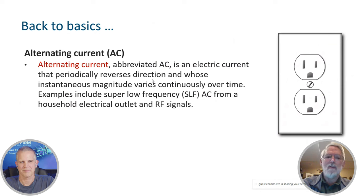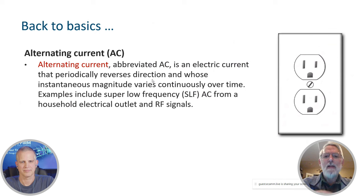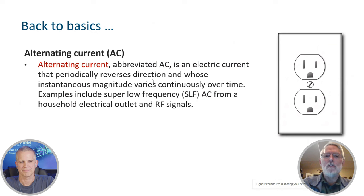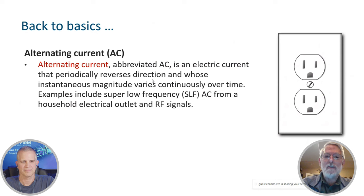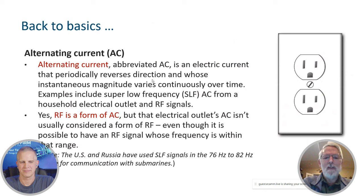That leads me to AC, or alternating current. We tend to think of AC as the wall plug where we plug in a lamp, but it's a lot more than that. It's an electric current that periodically reverses direction and whose instantaneous magnitude varies continuously over time. Examples include the AC from a wall outlet, which falls into a chunk of the spectrum called super low frequency, or SLF. But notice: AC also includes RF signals. RF signals are a form of alternating current.